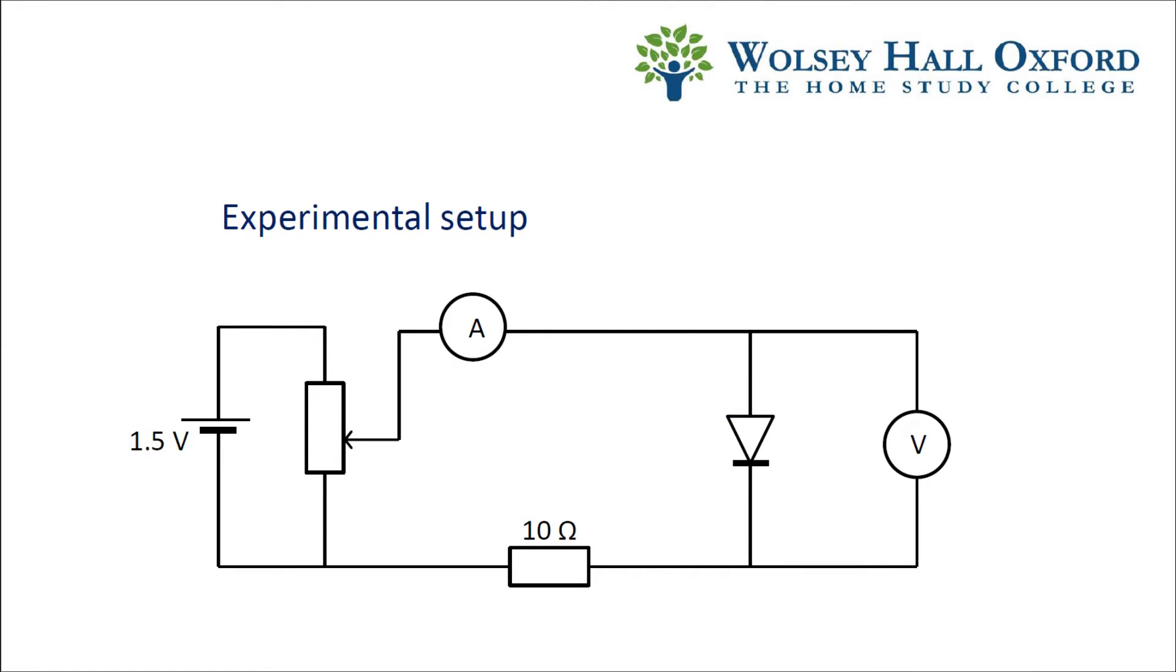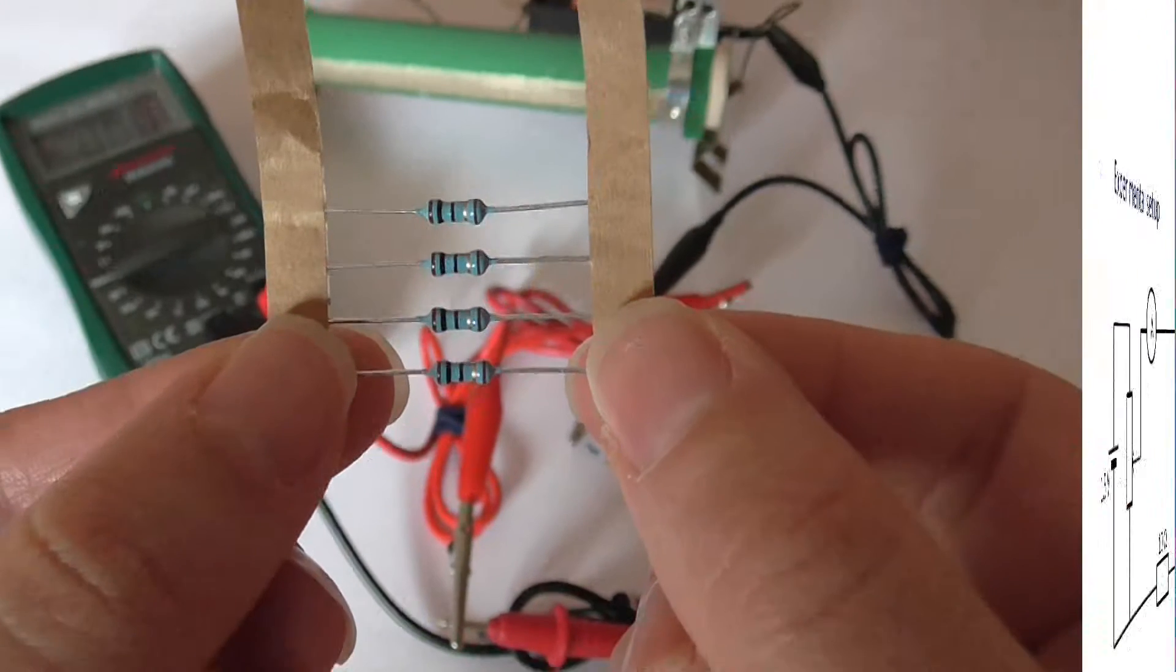A rheostat will be used as a potential divider to control the voltage. Also note the 10 ohm resistor in series with the diode. This is so that the diode doesn't get damaged with any high currents.